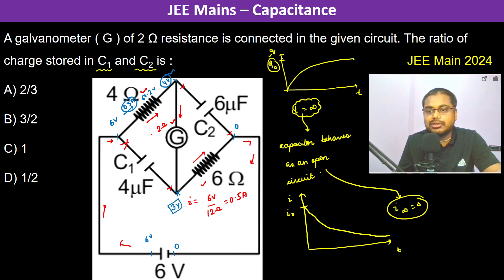Now what is being asked - the ratio of the charge stored in C1 and C2. C1 is connected across 6 volts and 3 volts, so the charge stored in C1, Q1, equals 4 microfarads into 3 volts. Q2 - this C2 is connected across 4 volts and 0 volt, so 6 microfarads into 4 volts. If you divide the ratio, 3 by 6 is 1 by 2 and 4 and 4 cancel. Therefore the ratio becomes 1 by 2, so Q1 by Q2 becomes 1 by 2.